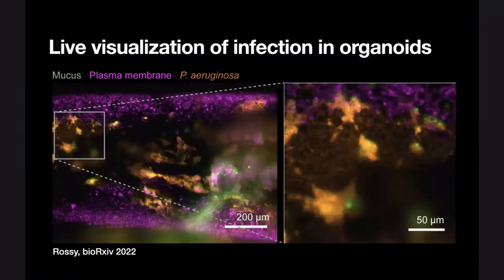This philosophy led us to develop many different types of tools — not only microscopes, but trying to rebuild the sample around the microscope. For example, we're developing new systems to perform live visualization of infections, not in full organisms but in organoids, because we think it's the only way to have very precise single-cell-level resolution imaging of infectious processes.